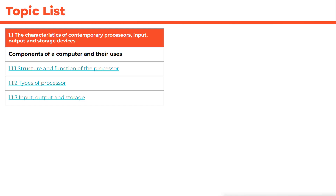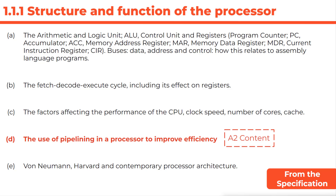There are three subject areas here: the structure and function of processors, the types of processors we use, and also input, output, and storage. Looking at specification section 1.1.1, the structure and function of a processor boils down to four key parts for AS or five for A2. Part A covers component parts of the CPU; Part B covers the fetch-decode-execute cycle; Part C covers performance factors — clock speed, number of cores, and cache. A2 students also need to understand pipelining, and then von Neumann, Harvard, and contemporary architectures.